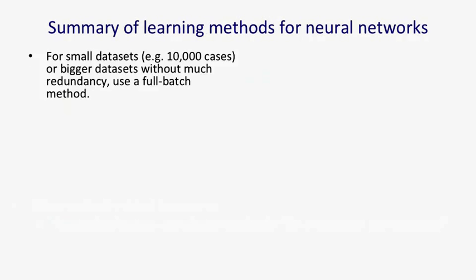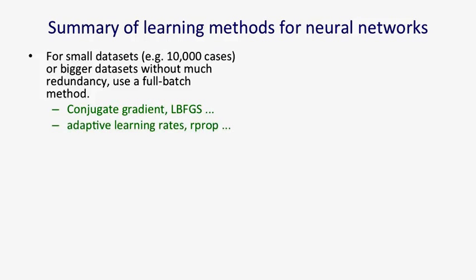A summary of the learning methods for neural networks goes like this. If you have a small data set — say 10,000 cases or less — or a big data set without much redundancy, you should consider using a full-batch method. There are full-batch methods from the optimization literature like nonlinear conjugate gradient, LBFGS, or Levenberg-Marquardt, and one advantage of using those methods is that they typically come with a package, so when you report results in a paper you just have to say which package you used. Alternatively, you could use adaptive learning rates or RProp, which are both essentially full-batch methods developed for neural networks.